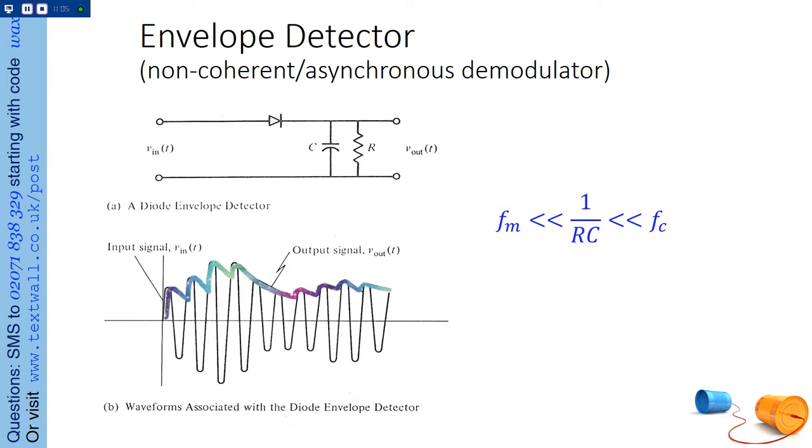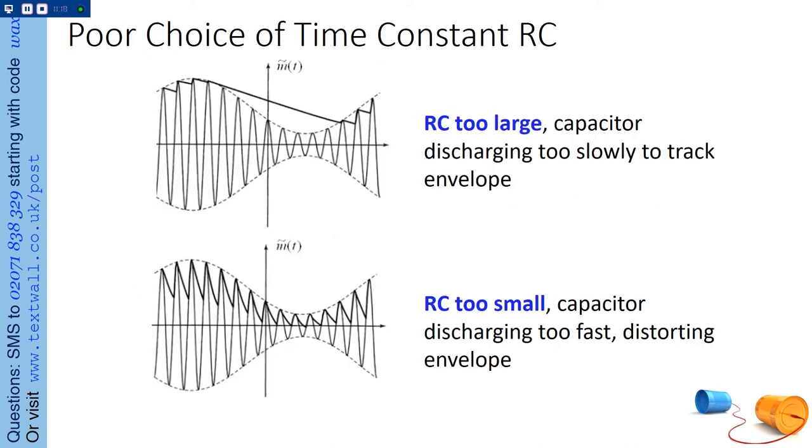Now, you can't have the time constant too big, and you can't have the time constant too small. So it needs to be contained between your carrier frequency and your modulating frequency. That is, your message frequency. So if the time constant is too big, then the capacitor, as it discharges, it'll miss parts of the signal. And if it's too high, well, you have high-frequency distortion in your signal. Between those, you're able to trace the envelope of your signal. So that's an envelope detector.